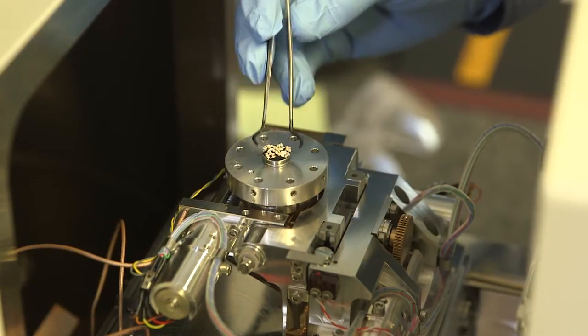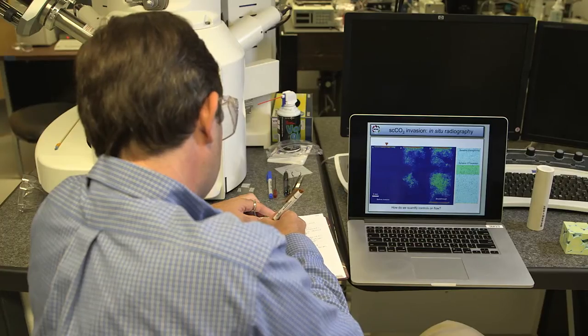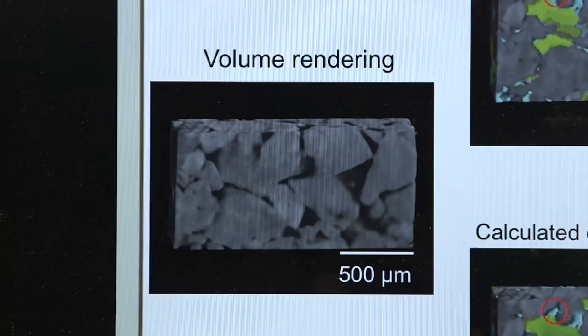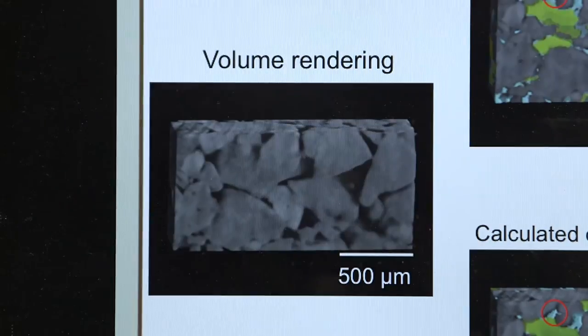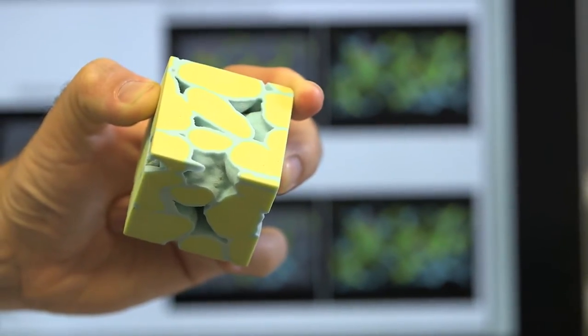A lot of the work which we do in thrust group two, and also with thrust group three, focuses on modeling CO2 movement and reactions at the scale of individual pores and rocks. If you think about a sandstone, it's made of millions of little grains of sand which have been glued together over time. The modeling which we do focuses on looking at transport and reactions at that scale — the scale of pores and individual grains.